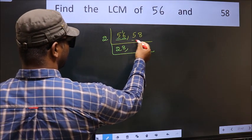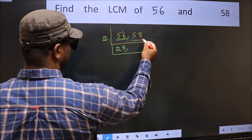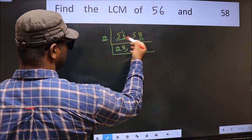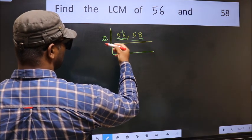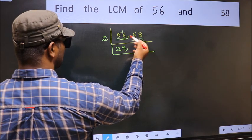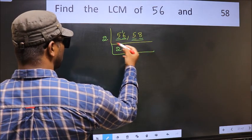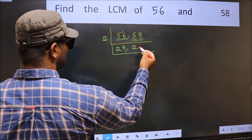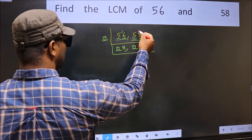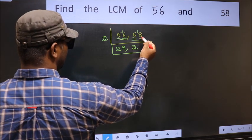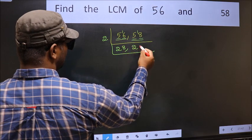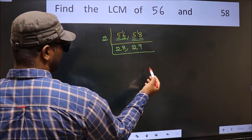The other number is 58. Last digit is 8, so this is also divisible by 2. The first digit is 5. A number close to 5 in the 2 table is 2 2's, which is 4. 5 minus 4 is 1, carried forward gives 18. When do we get 18 in the 2 table? 2 9's are 18.